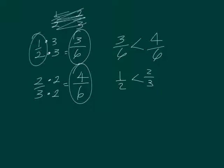Now I can compare the two and all I have to do is look at the numerator. The 3 is smaller than the 4, or so 3 sixths is smaller than 4 sixths, or if we go back to our original equation, 1 half is smaller than 2 thirds.